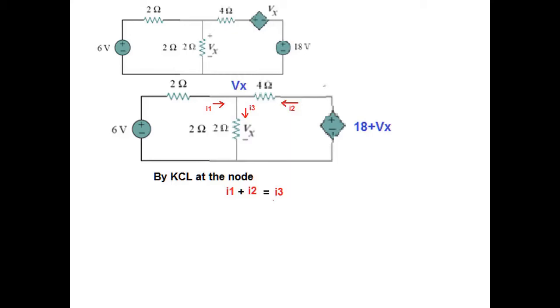By nodal method, current entry plus current entry equals current leaving. So I1 plus I2 equals I3. I1 is 0 minus Vx, same direction for plus 6, divided by 2.